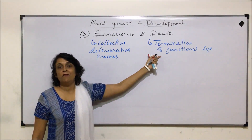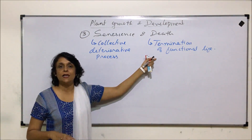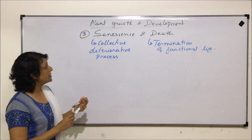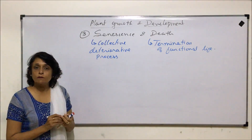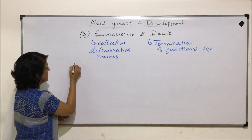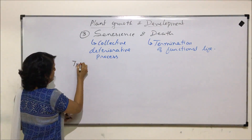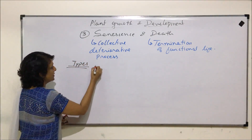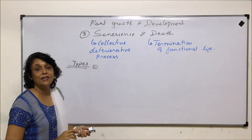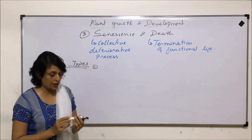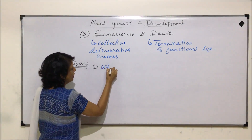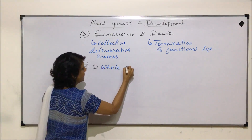Senescence is a gradual process where all activities slowly start to get slowed down, and that results in the aging process. The final termination of all these activities results in death. When we talk of types of senescence, we look at which part undergoes aging. The first type is whole plant senescence.